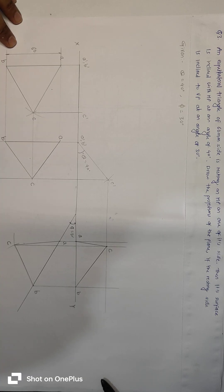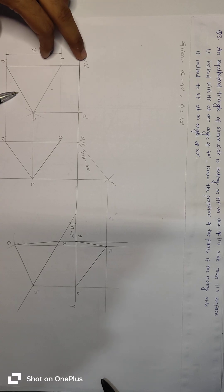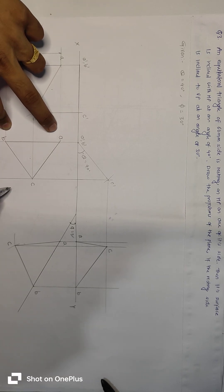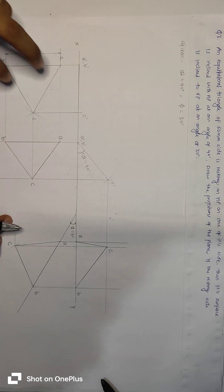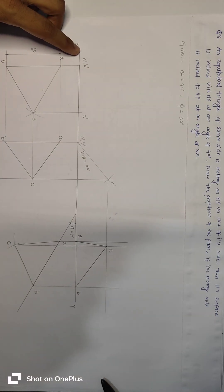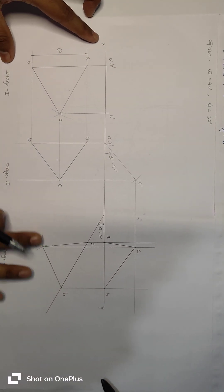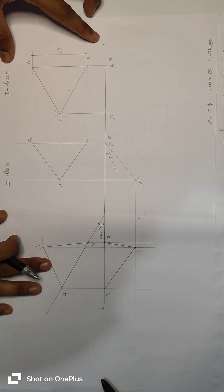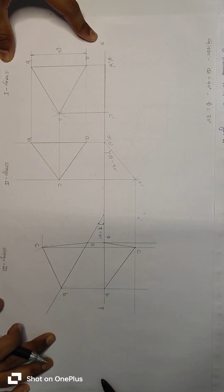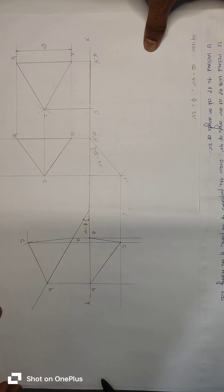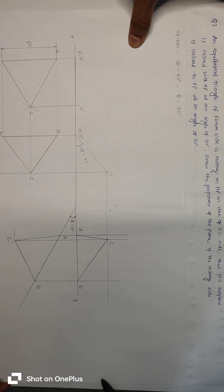The marking scheme is: for stage 1 top view 2 marks, front view 1 mark; stage 2 top view 2 marks, front view 1 mark. So stages 1 and 2 comprise a total of 6 marks — 3 plus 3. Then the main task is to identify which angle is given.